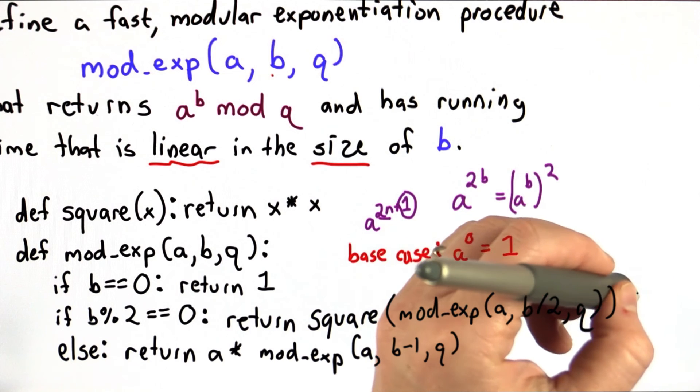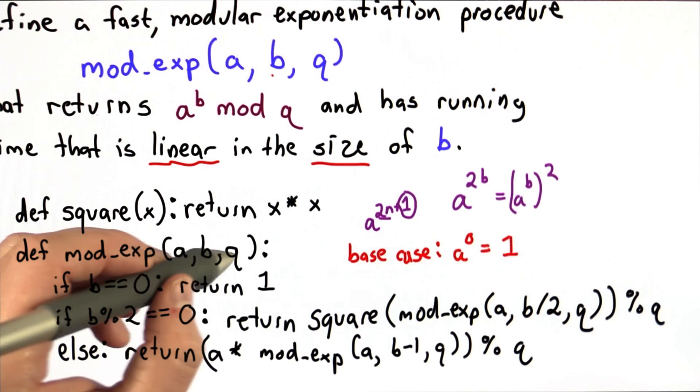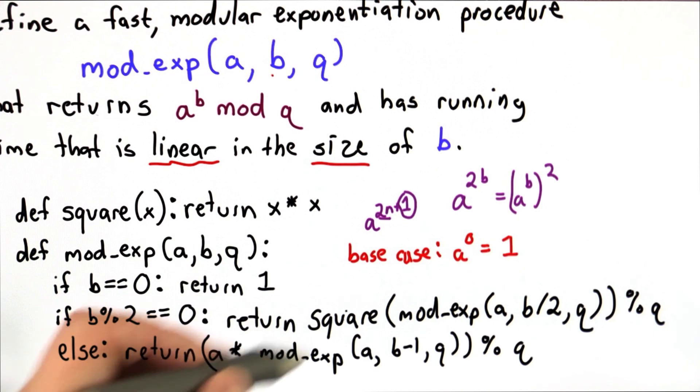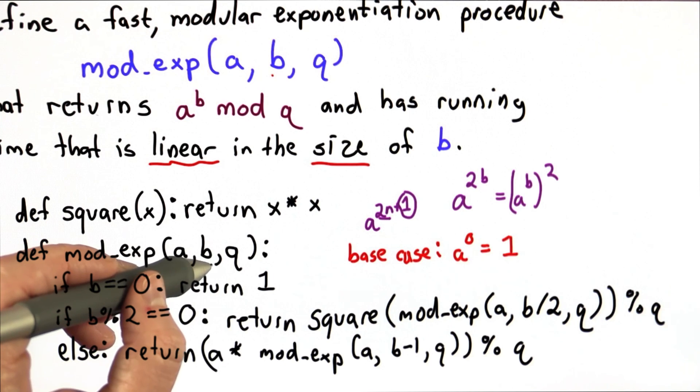We're going to add the mod operator to do these modulo q. And that will give us the result of raising a to the b power modulo q using a number of multiplications that's close to the log of the value of b.